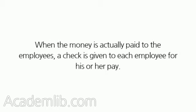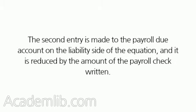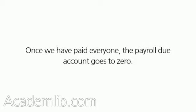When the money is actually paid to the employees, a check is given to each employee for his or her pay. This money comes from the cash account, so it is reduced by the amount of the payroll check. The second entry is made to the payroll due account on the liability side of the equation, and it is reduced by the amount of the payroll check written. Once we have paid everyone, the payroll due account goes to zero.